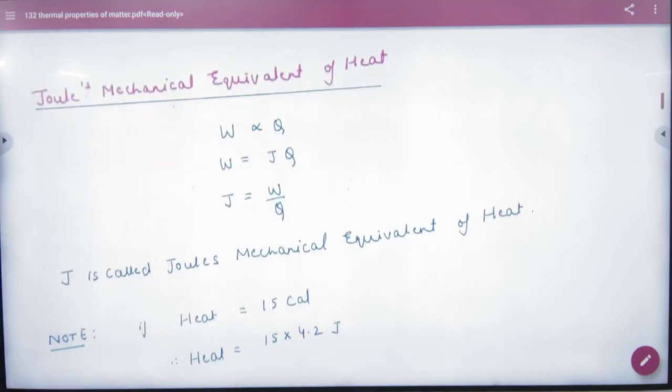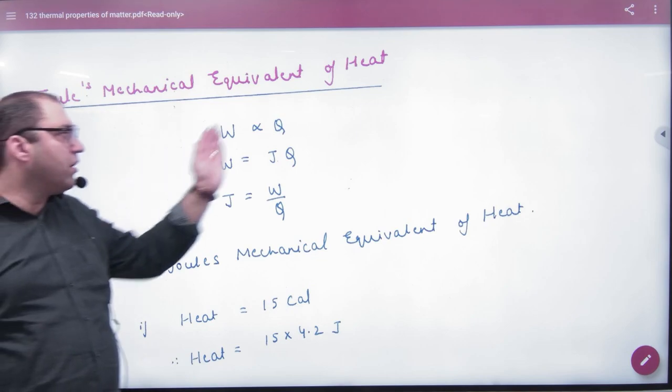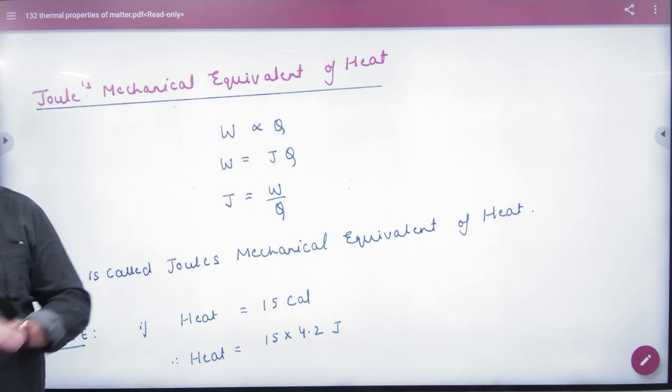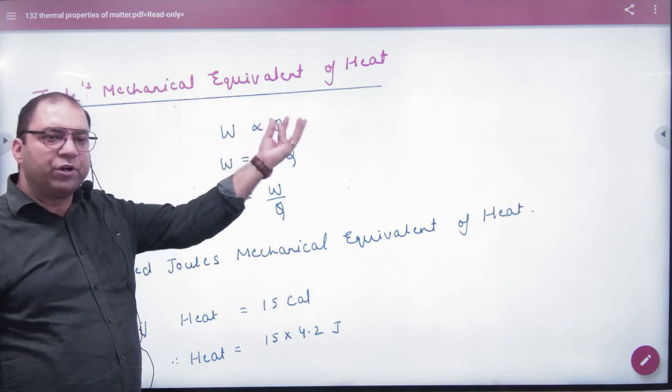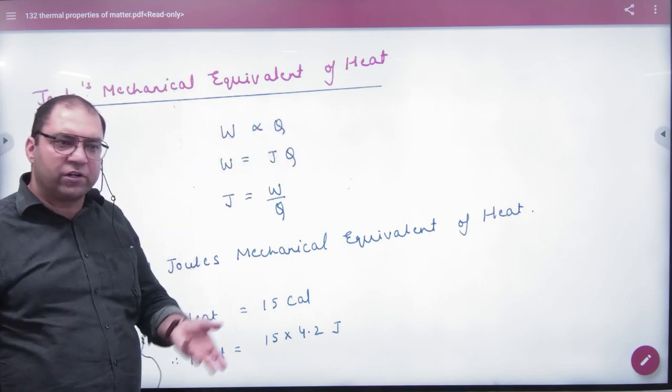Joules mechanical equivalent of heat tells us that work done can be converted into heat, and heat can be converted into work done. Once the heat is produced, work done will be produced.